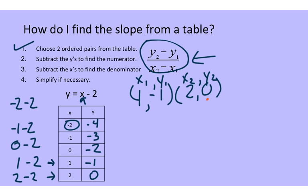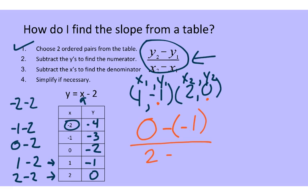We're going to take y2 minus y1: 0 minus negative 1. And then put it over x2 minus x1: 2 take away 1. Now solving: 0 take away negative 1 makes a positive 1, and 2 take away 1 is positive 1. So I subtracted the y's for the numerator and the x's for the denominator. 1 divided by 1 is just 1, so my slope m is 1.